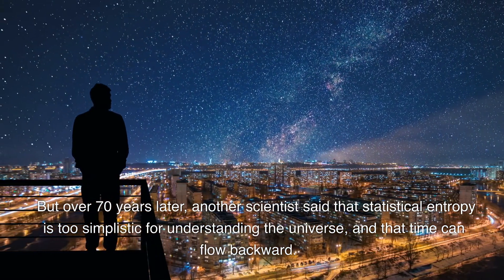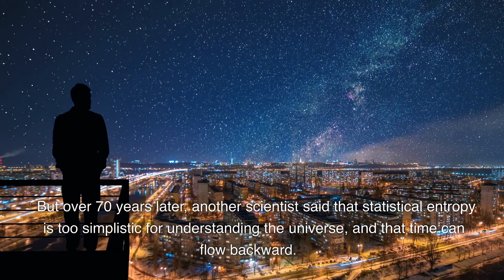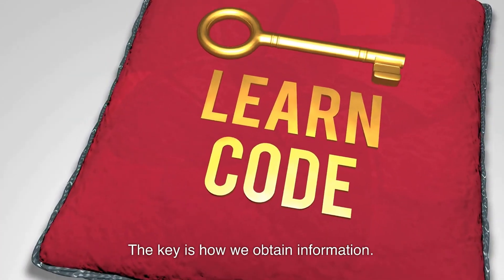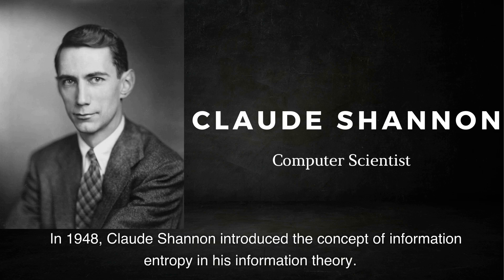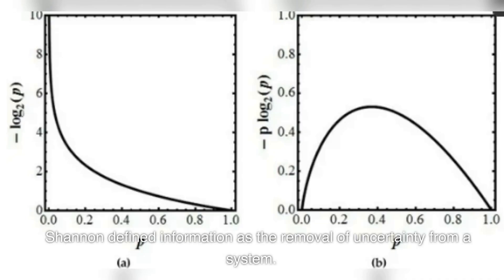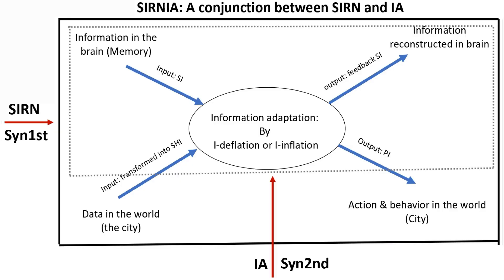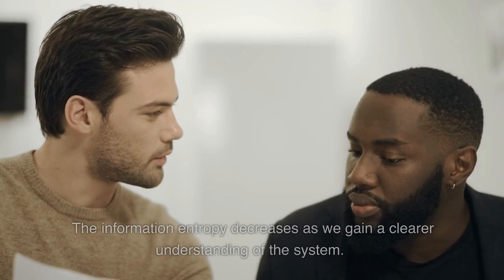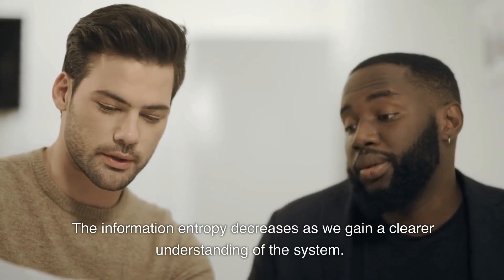In 1948, Claude Shannon introduced the concept of information entropy in his information theory. Shannon defined information as the removal of uncertainty from a system. When we try to understand an unfamiliar phenomenon, it is like standing outside a black box where information entropy is at its maximum. The information entropy decreases as we gain a clearer understanding of the system.